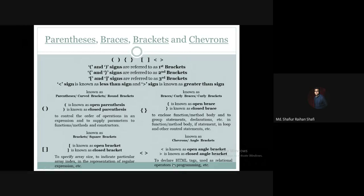In mathematics, less than and greater than are relational operators indicating a relation. But when we use them as a pair — less-than sign followed by greater-than sign — they are referred to as chevrons. Chevrons are very important, specifically for HTML tag declarations in programming.